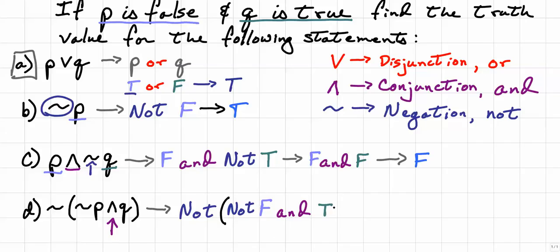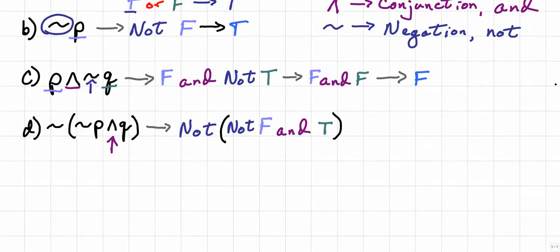So now I need to determine what the truth value of this whole thing is. We'll start inside the parentheses, since that's what we're going to do any time we deal with order of operations. Now notice that this NOT F will be true, and I will still have AND, and then I still have this true.